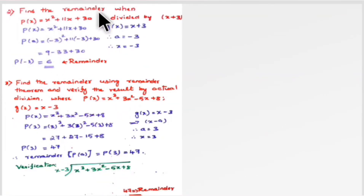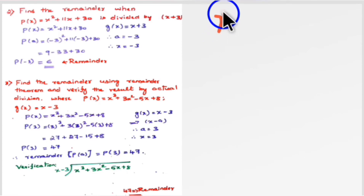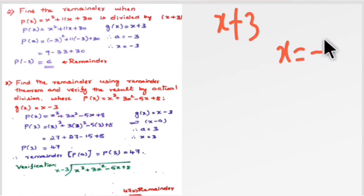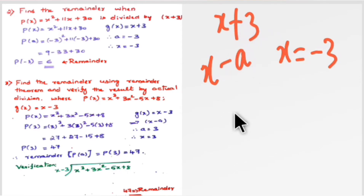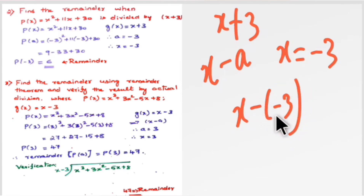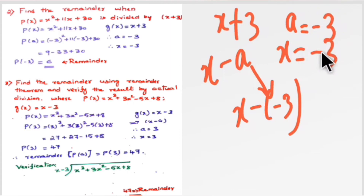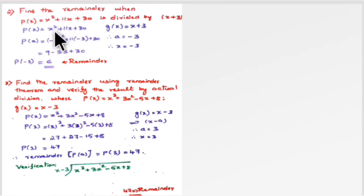Next question: find the remainder when p(x) = x² + 11x + 30 is divided by (x + 3). They did not mention any method, so you can use the Remainder Theorem for speed. The divisor is (x + 3). Comparing with standard form (x - a), we write it as x - (-3), so a = -3, hence x = -3. Substitute x = -3 into the polynomial and you get the remainder as 6.